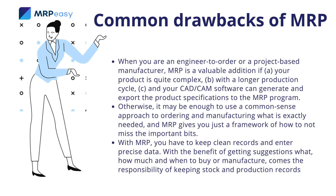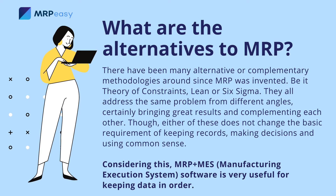With MRP, you have to keep clean records and enter precise data. With the benefit of getting suggestions on what, how much, and when to buy or manufacture, comes the responsibility of keeping stock and production records. For the production planning to be correct, you need to record finished operations and manufacturing orders as soon as production gets completed. It's up to you to judge if that is too large a price to pay for the benefits.